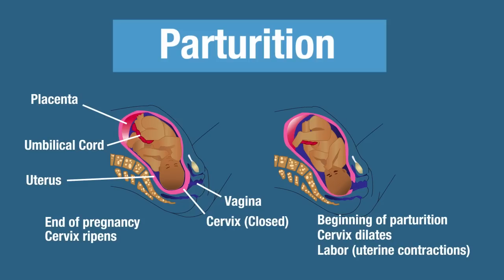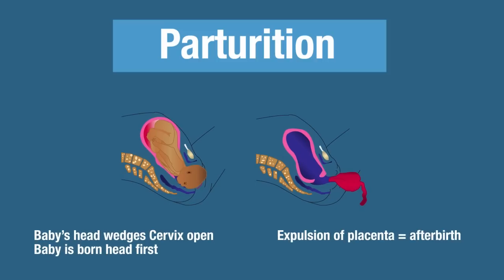Uterine contractions begin, and right now it's not clearly understood what initiates uterine contractions — we're going to talk more about that in a moment. The baby's head wedges the cervix open. Remember that the baby is born headfirst. And then lastly is the expulsion of the placenta, which is also called the afterbirth.